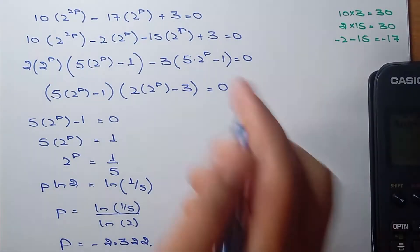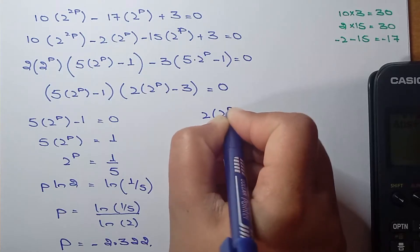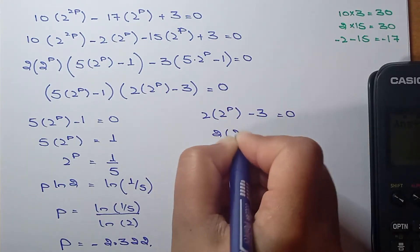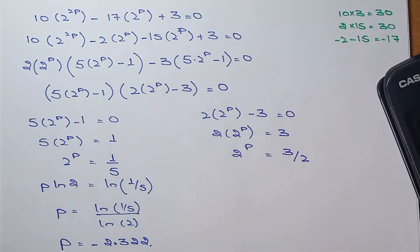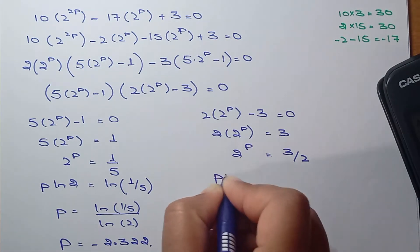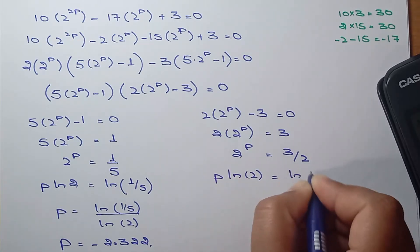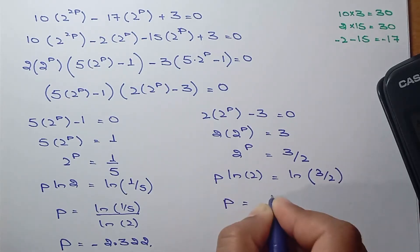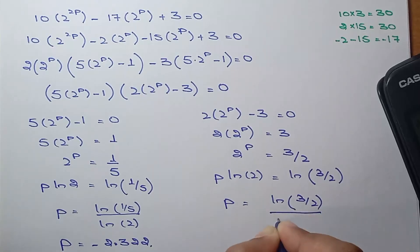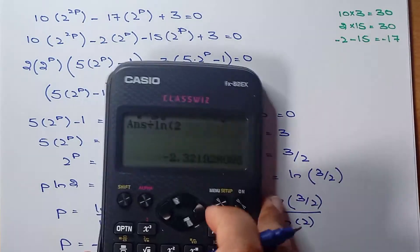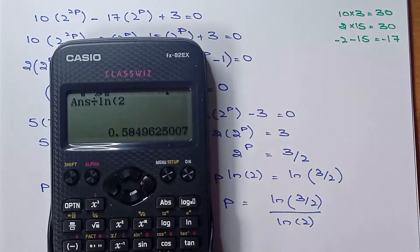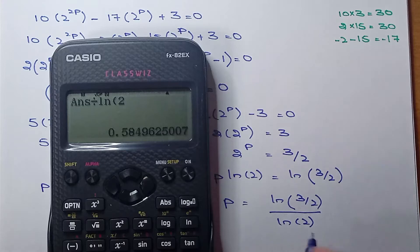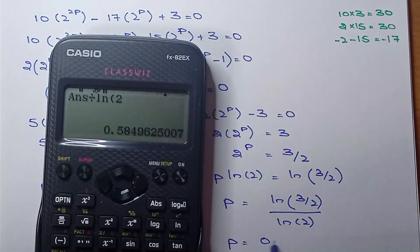For the second factor: 2 times 2 to the P minus 3 equals 0, so 2 to the P equals 3/2. Taking ln on both sides: P ln 2 equals ln(3/2), so P equals ln(3/2) divided by ln 2, which gives approximately 0.585 to 3 decimal places. So P is minus 2.322 or 0.585.